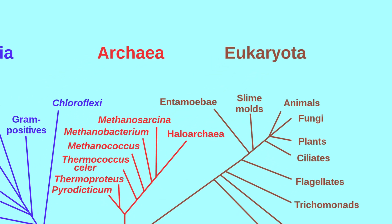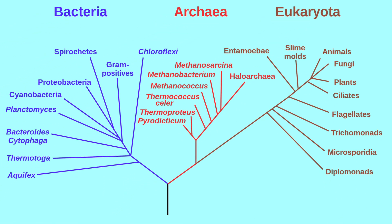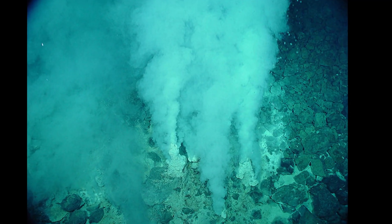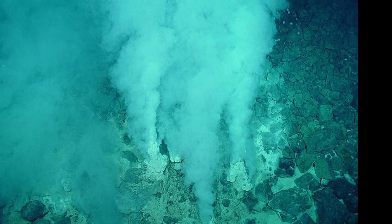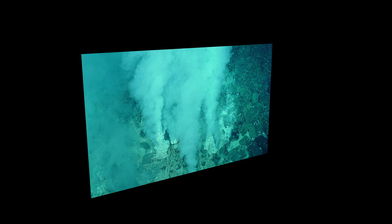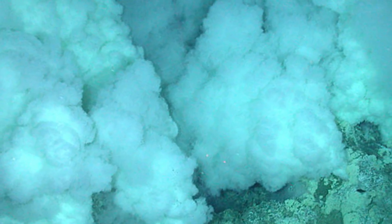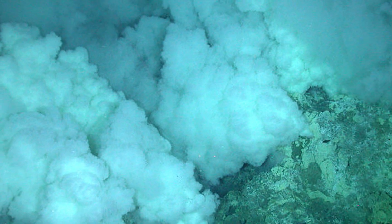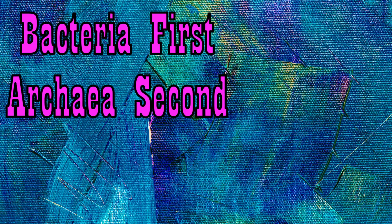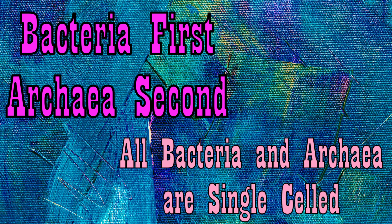Eukaryotes are the third and last of the three domains of life to come to be. Bacteria and archaea, the other two domains, preceded eukaryotes. The first life that ever existed doesn't fit into any of the three domains we have now, but of those three, bacteria came first and then archaea, both according to genomic data as early as 3.4 billion years ago, and every last species of both bacteria and archaea are single-celled organisms.